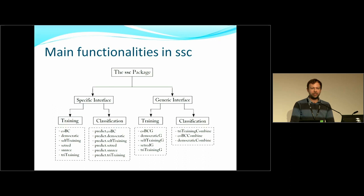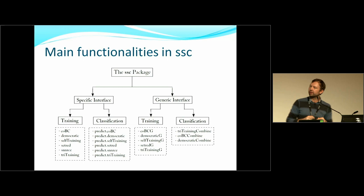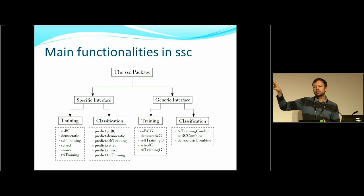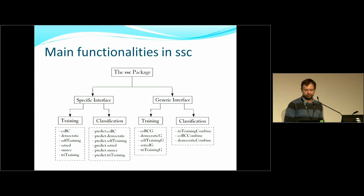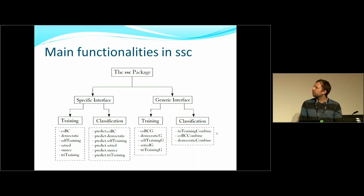The package has two interfaces: the specific interface and the generic interface. You'll almost always use the specific interface — it's simpler and is actually implemented using the generic interface underneath. The generic interface is still available for flexibility. There are six training functions, each with their own predict functions, following a standard build-model-then-predict interface.